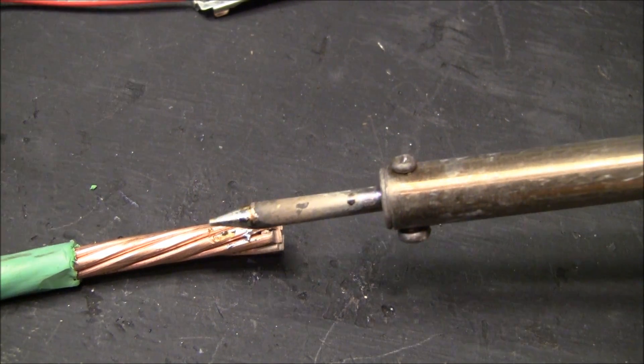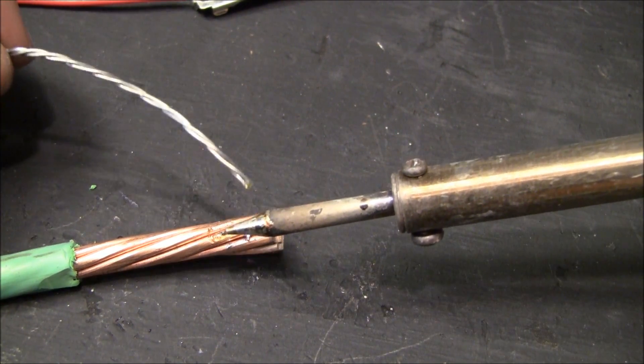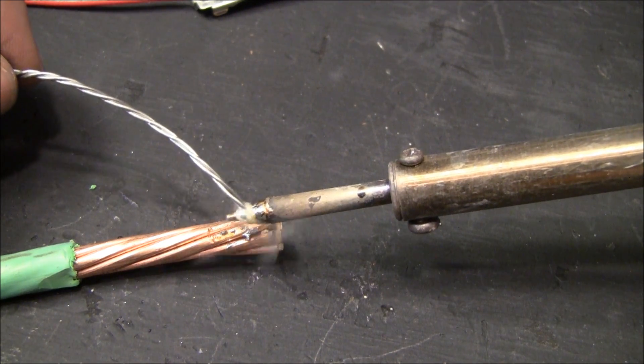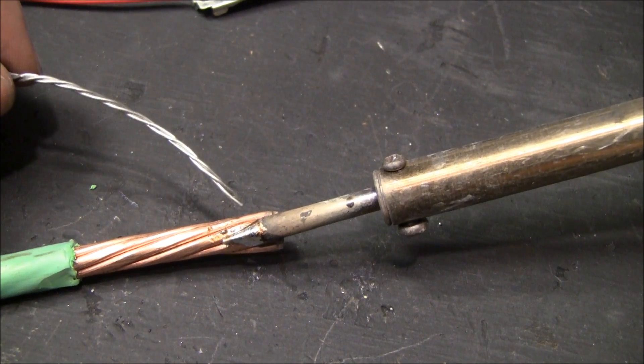All right, so now I've cranked my iron up to about 800 degrees to see what happens. First thing you want to do is get a little solder on your iron so it can make contact with your wire.